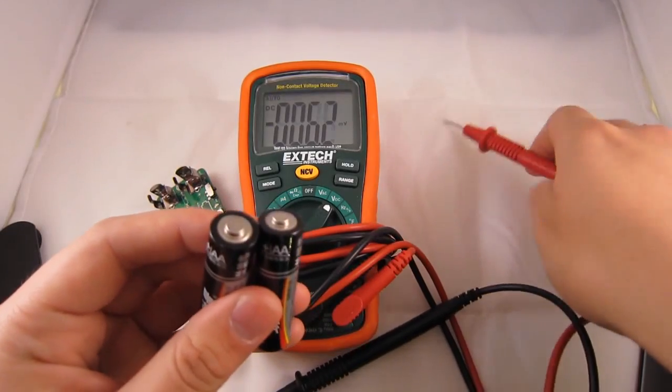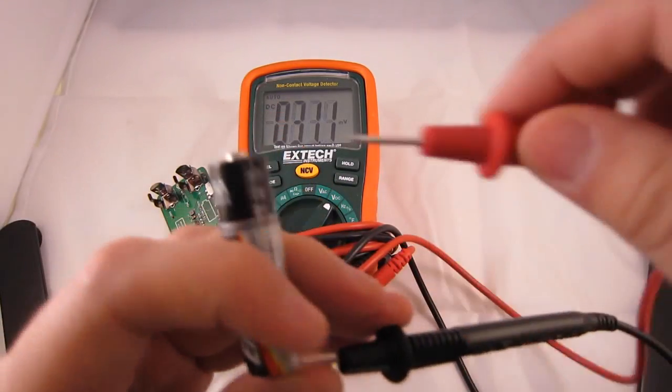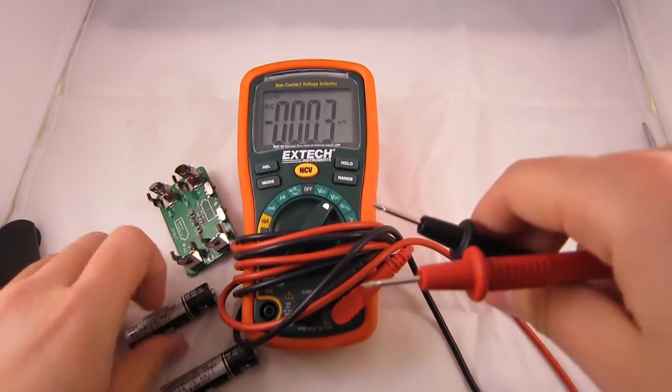So here are a pair of old batteries. They have been used for a long time so each one, if I measure the output voltage, can only output about 1.0V.